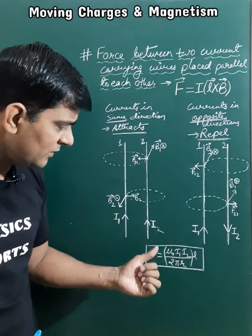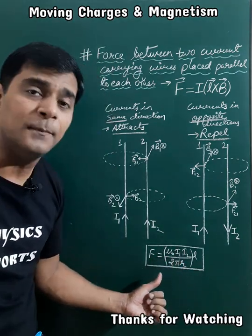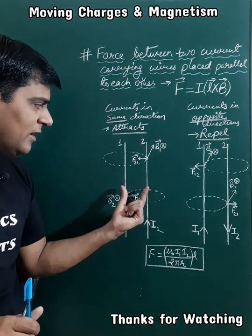The expression of force will be given by mu naught I1 I2 L upon 2 pi R, where R is the perpendicular distance between the wires.